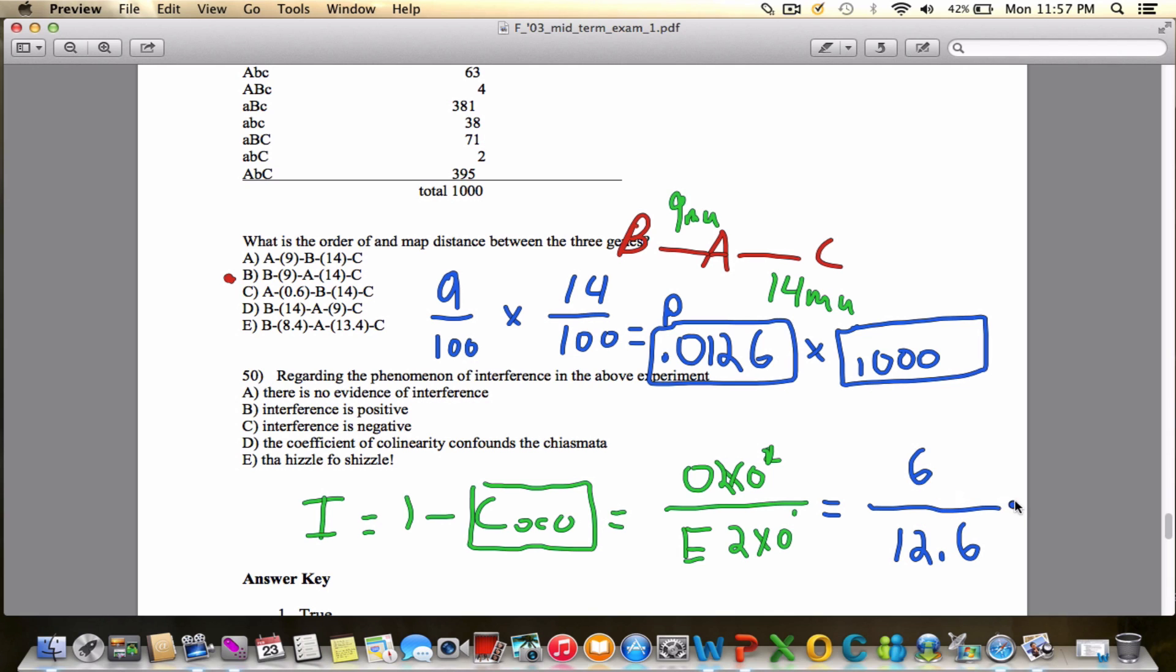And whenever I divide these two numbers together of 6 divided by 12.6, well, I get 0.47 or 0.48 to round it up. So that's what our coefficient of coincidence is.